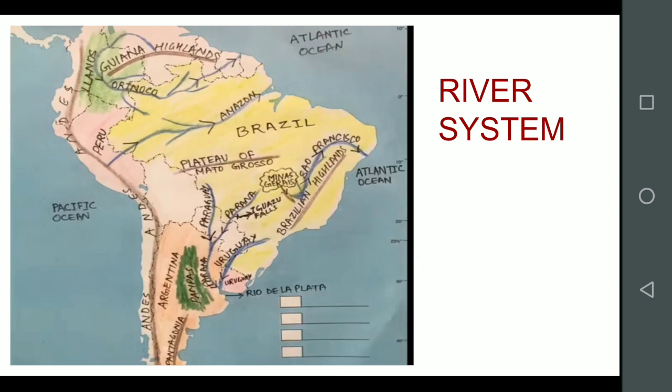The La Plata river system is formed by the Parana, Paraguay and Uruguay rivers. These rivers flow southwards and drain into the South Atlantic Ocean in a wide estuary in Argentina, which provides an excellent harbor.